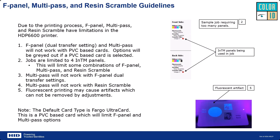Jeff adds that F panel multi-pass and resin scramble are very specific use cases. If anyone is having problems, you can call tech service as they are well versed on how these work and how to improve anything going wrong. That concludes the presentation portion — now Jeff is going to walk us through features and capabilities of the HDP-6600 printer driver.